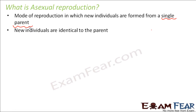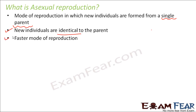New individuals are identical to the parent — physically identical and genetically identical — so in every way they are exact clones, exact copies of their parents. Asexual reproduction is also a faster mode of reproduction; compared to sexual reproduction, in a lesser amount of time more organisms are produced.